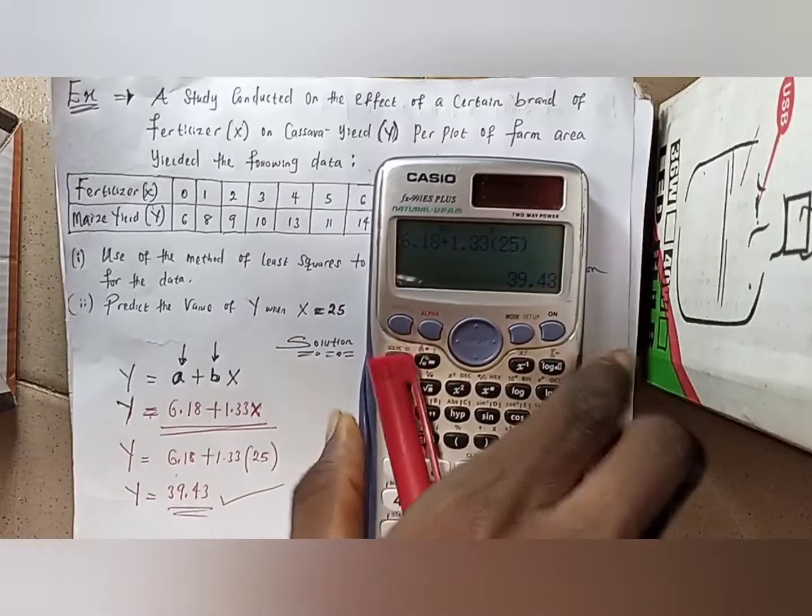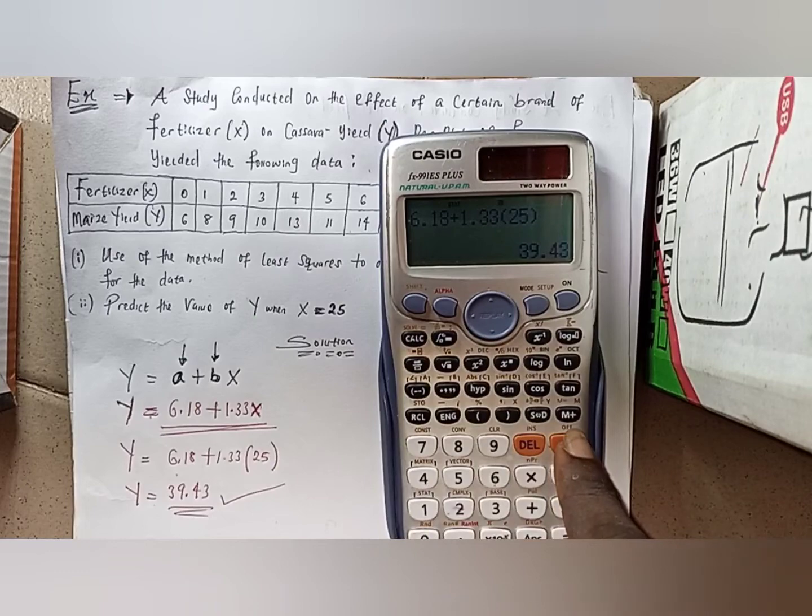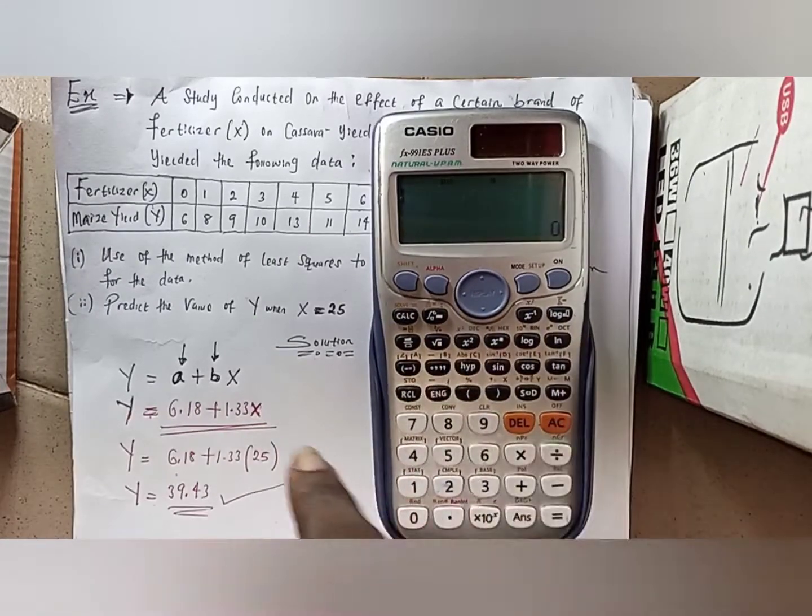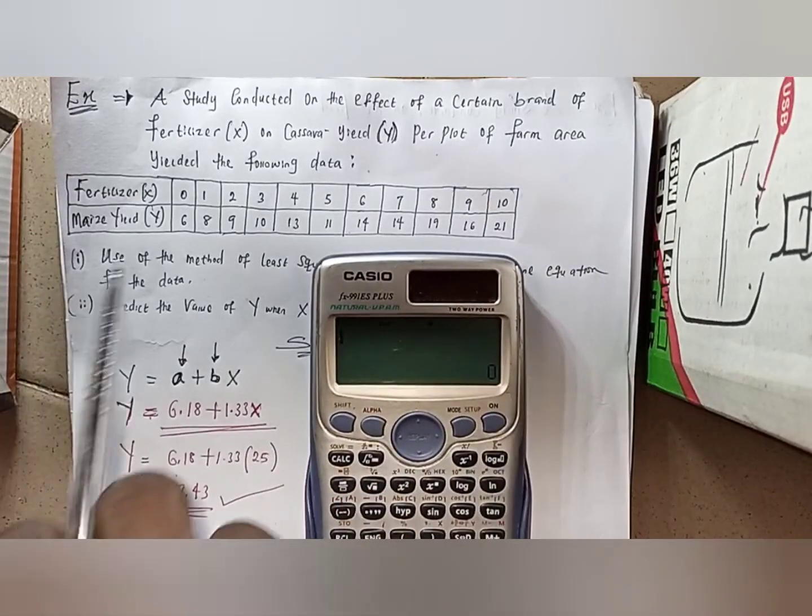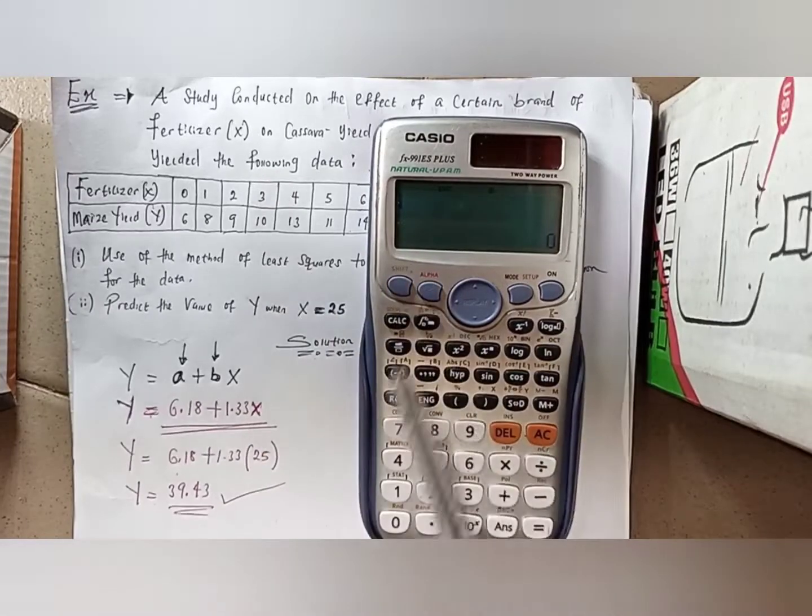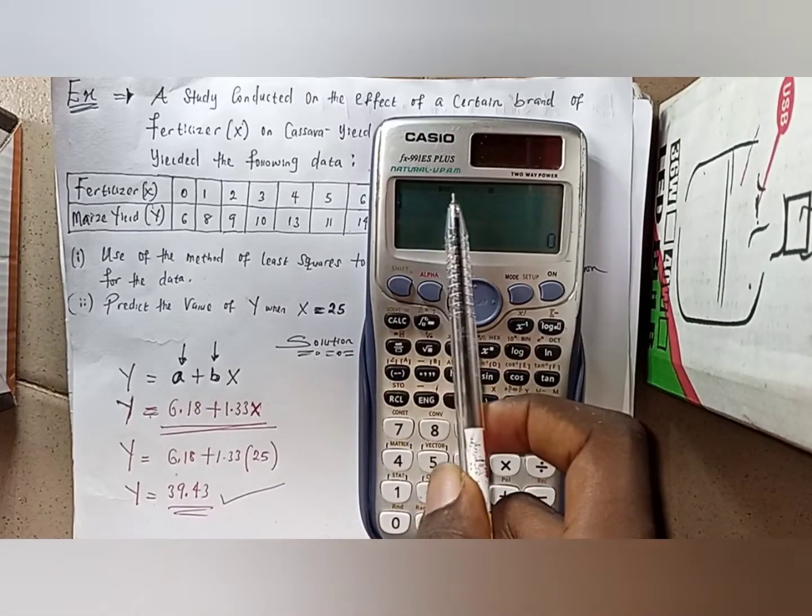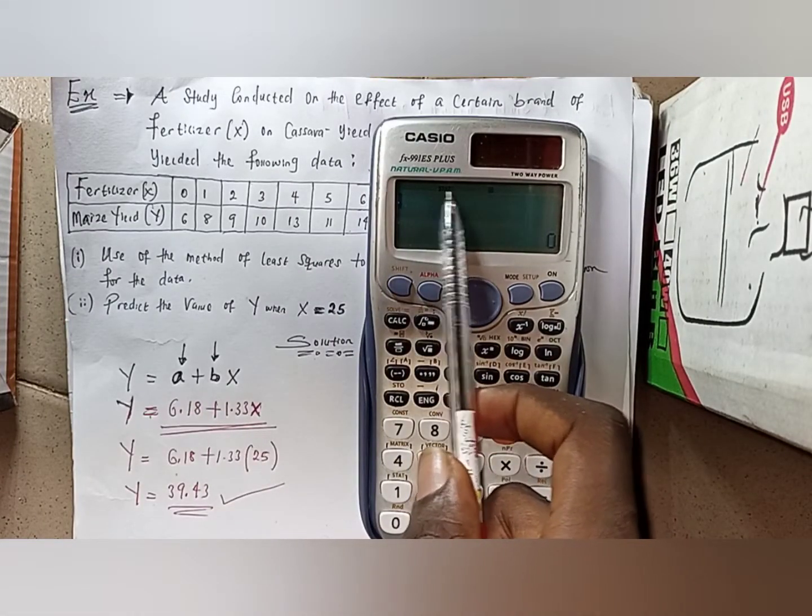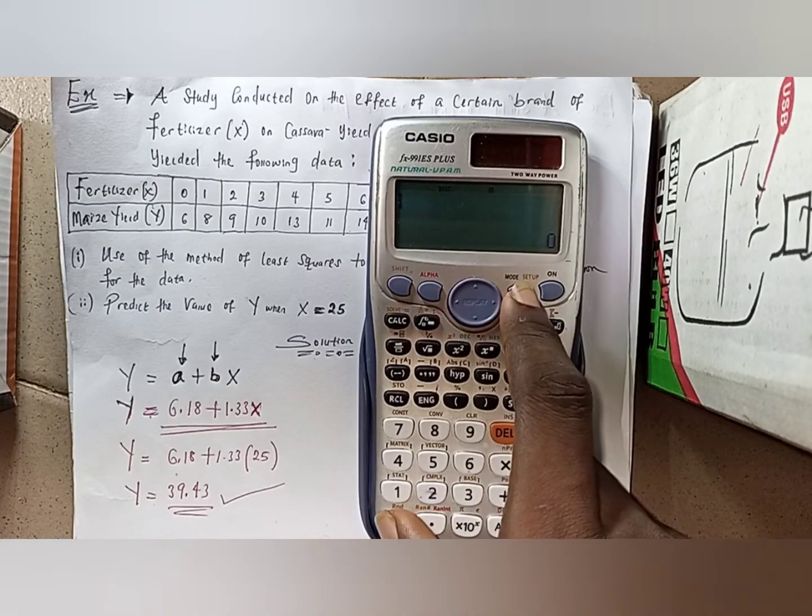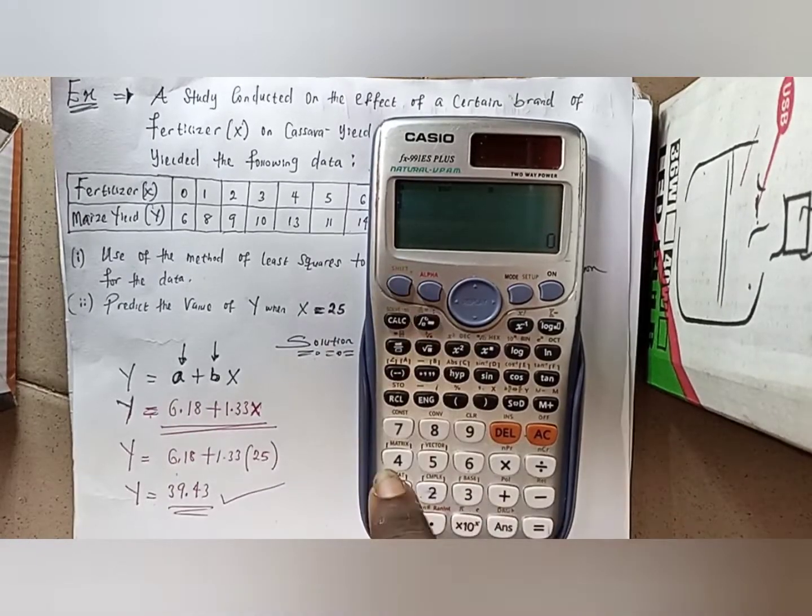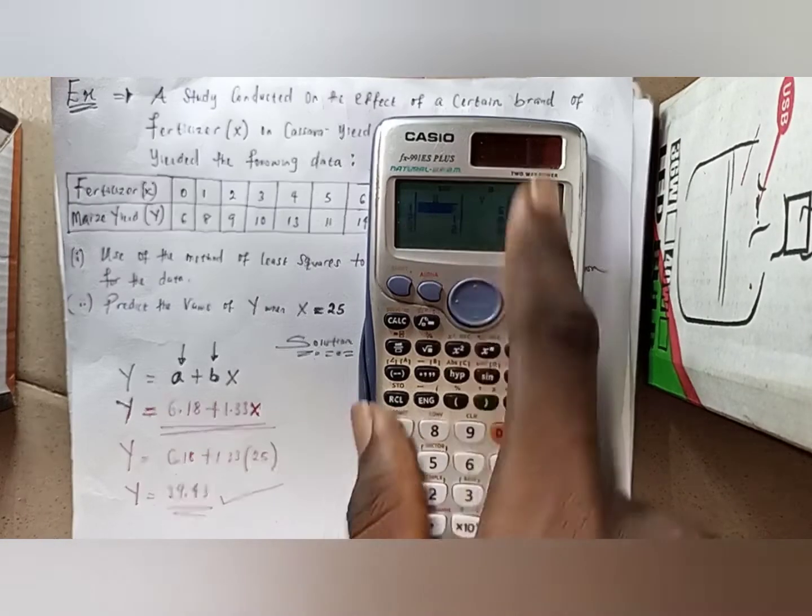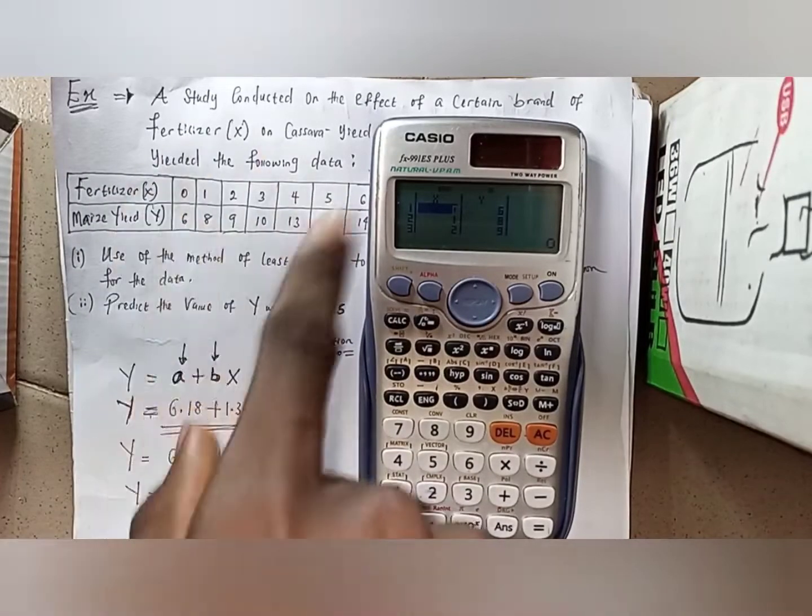I can still give assurance that all this set of data is still on this calculator, so as far as I still have the statistics showing here. If I press the mode button, shift and one for stats, then I go for data, I can still see all these tables, the set of values I have in this table.